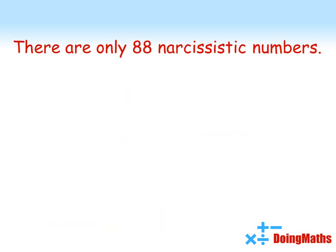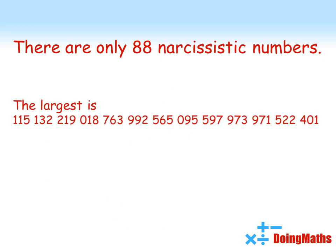Now in total, there are only 88 narcissistic numbers. The biggest one is here. This is a 39 digit number. Again, if you were to take each of those digits, raise them to the power of 39, and add them together, you would get back to that number. And the smallest narcissistic number is obviously 0, because 0 to the power of 1, its one digit, is 0.